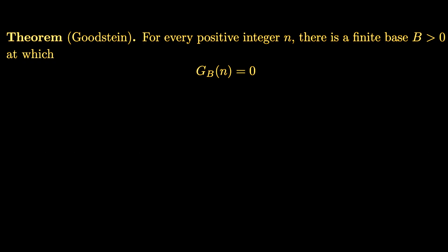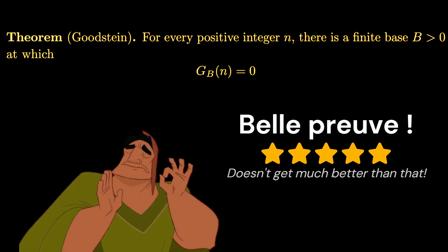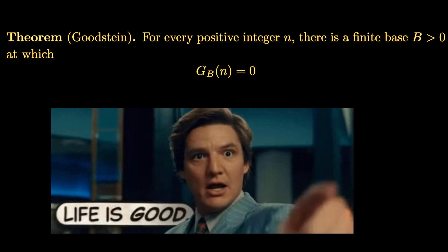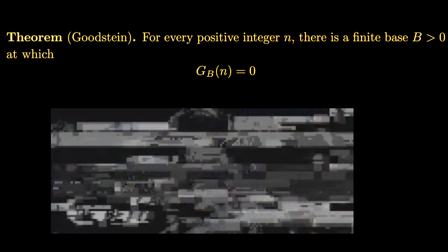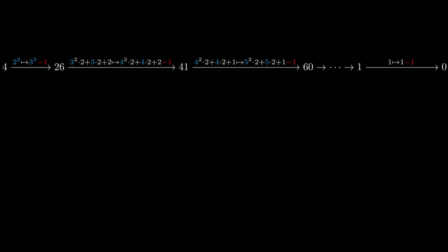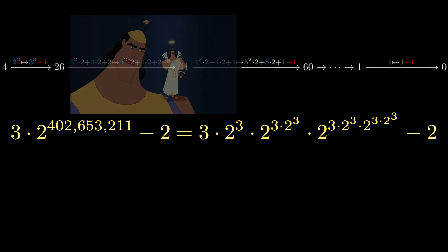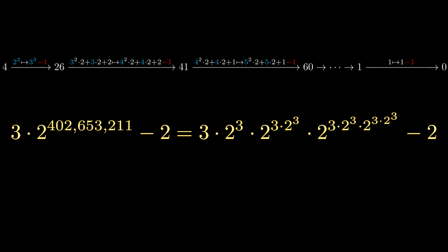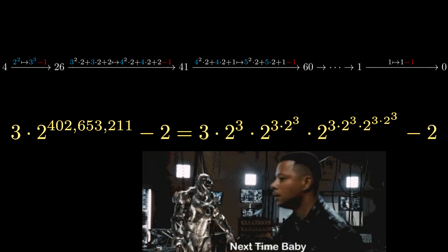What a beautiful proof for an initially unintuitive result. It doesn't get much better than that — but it can get a bit better. For example, how do we know that the Goodstein sequence for 4 has exactly 3 times 2 to the 402,653,211 minus 2 steps before it hits zero? Where does that number come from? Notice that this number actually has a very nice-looking pattern. As for where this number comes from and why that pattern is relevant, stay tuned.